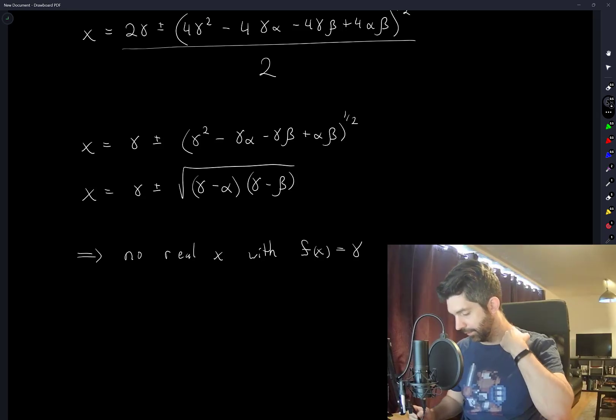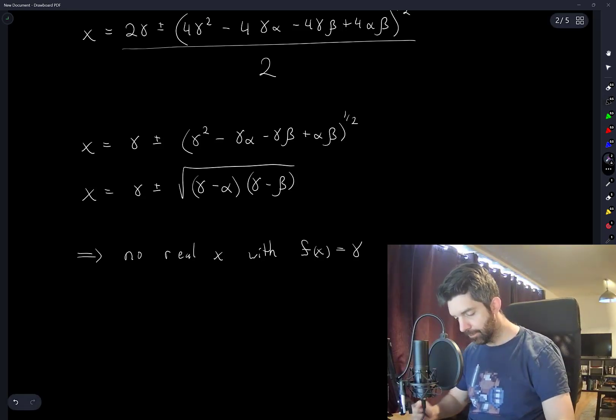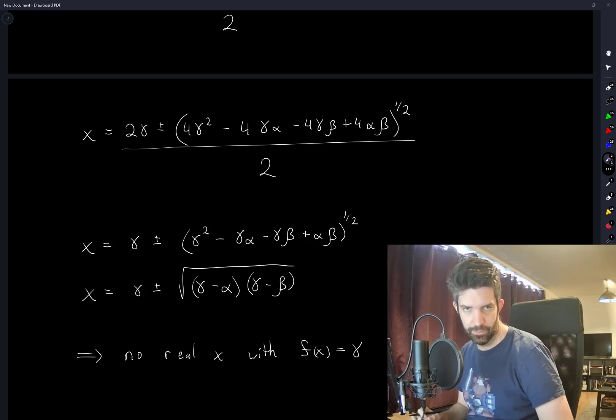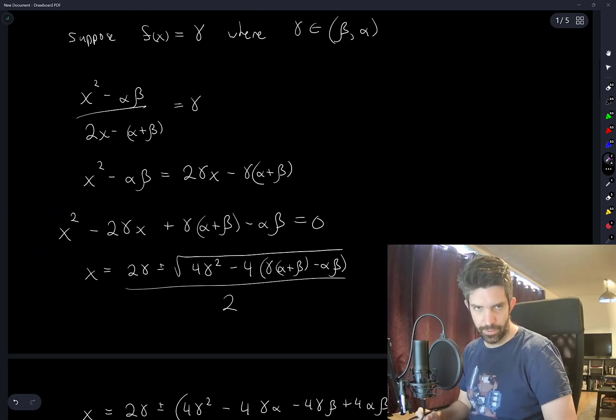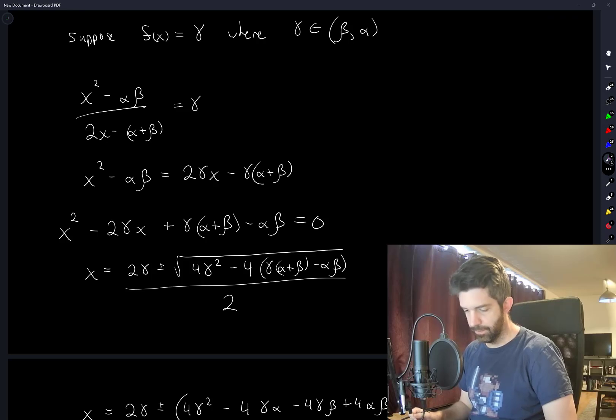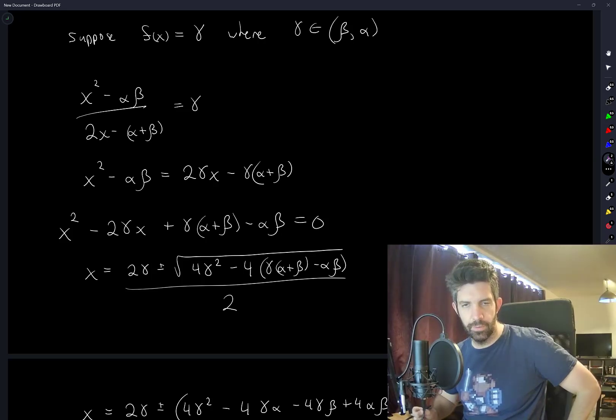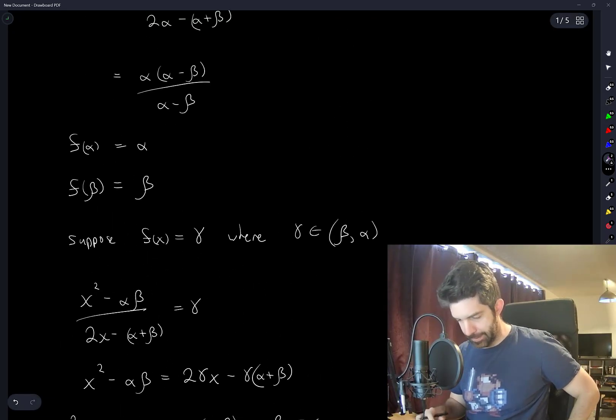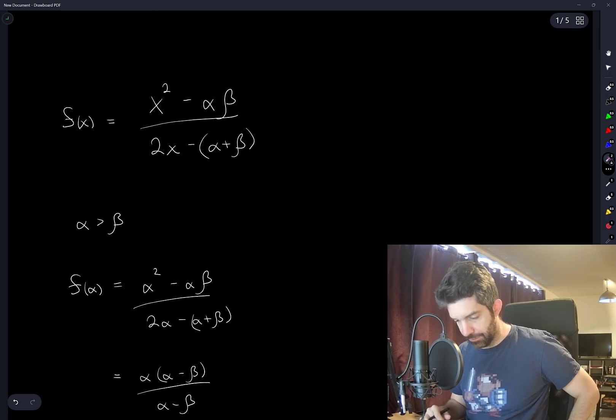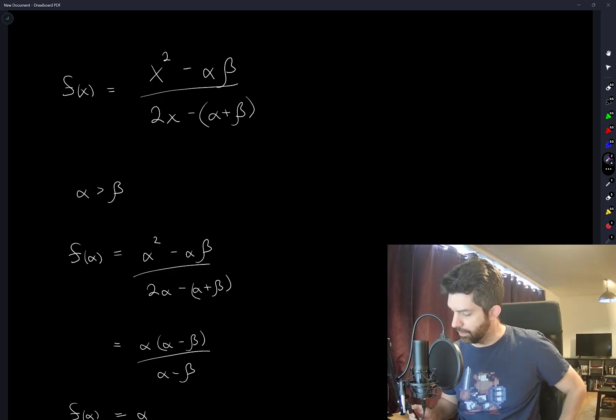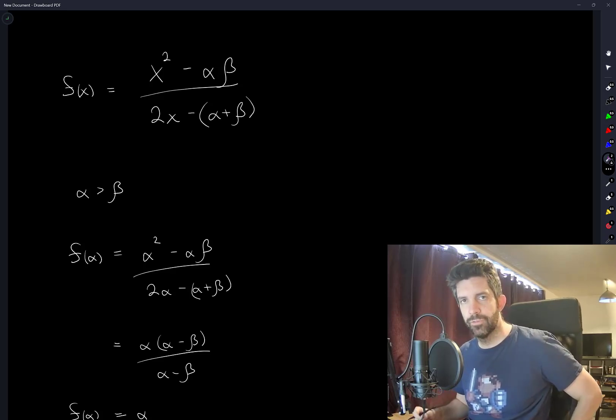So I have no real value of x that gives me f of x is equal to gamma. Yeah, again, I don't know if this is exactly how the viewer intended for me to solve this question. There might be another, maybe there's another analytical way or something like that of seeing that this function can never lie between alpha and beta. But I think this is a perfectly fine approach at the end of the day. But yeah, I'm curious to hear if other people have different ways of approaching this problem. Thanks for watchin.